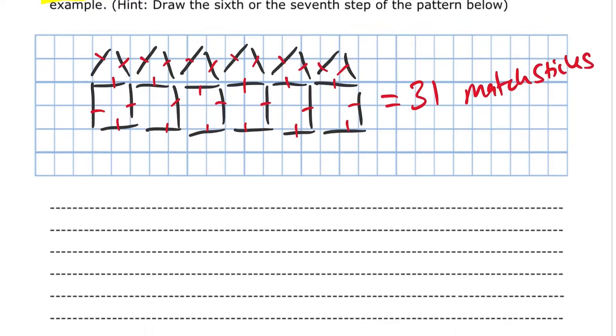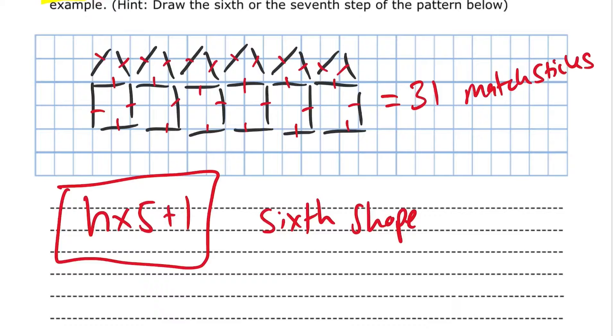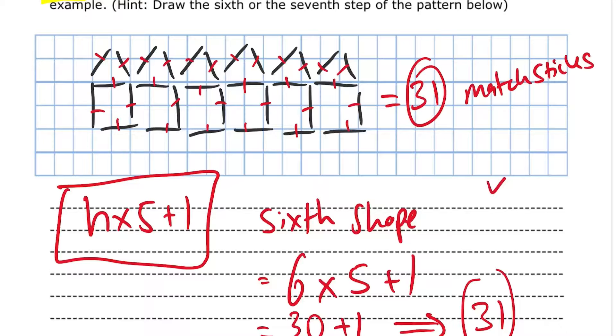And let's just confirm with our formula if that actually works. So H times 5 plus 1. That's my formula. So I'm going to do 6 times 5 plus 1. That gives me 30 plus 1. 31 matchsticks. And so that matches with that. It's correct.